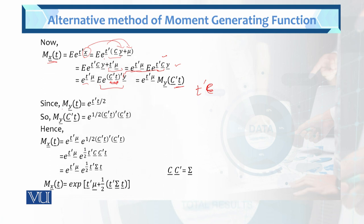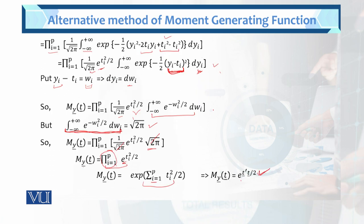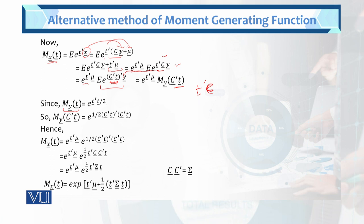So further, M_y(C prime t) equals exponential of (C prime t) prime times (C prime t) over 2, using the MGF of y derived earlier. Hence, M_x(t) equals exponential of t prime mu times exponential of (1/2) (C prime t) prime (C prime t). Multiplying exponentials together, M_x(t) equals exponential of (t prime mu + (1/2) t prime C C prime t).